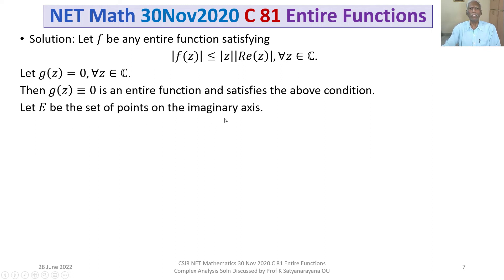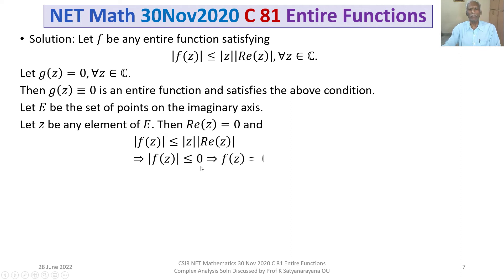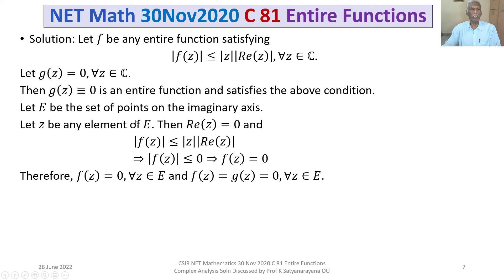Let E be the set of points on the imaginary axis. For any point Z in this set E, Re(Z) = 0 because Z is a purely imaginary number. Then looking at the condition, |F(Z)| ≤ |Z| · 0 = 0, which implies F(Z) = 0. Therefore F(Z) = 0 for all Z belonging to E, and G(Z) = 0 for all Z belonging to E as well. So F(Z) = G(Z) = 0 for all Z belonging to E — they coincide on E.